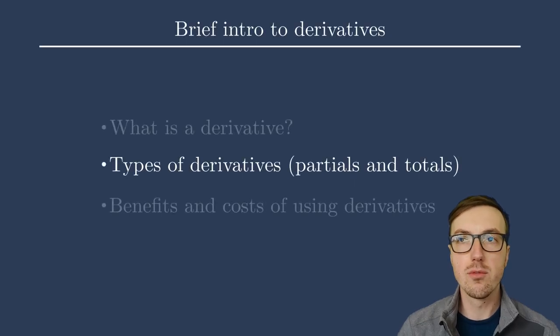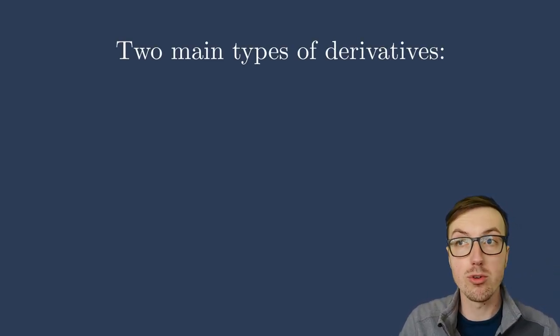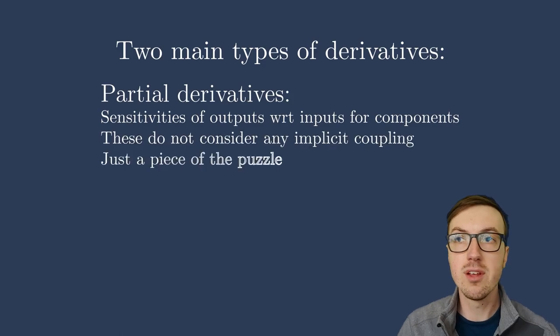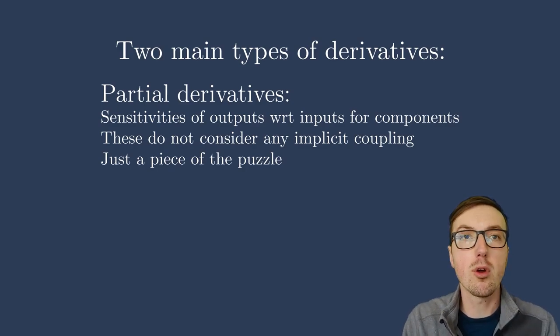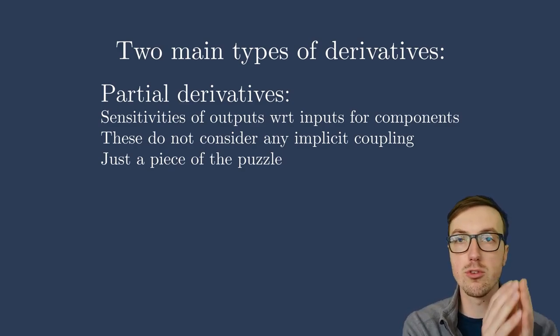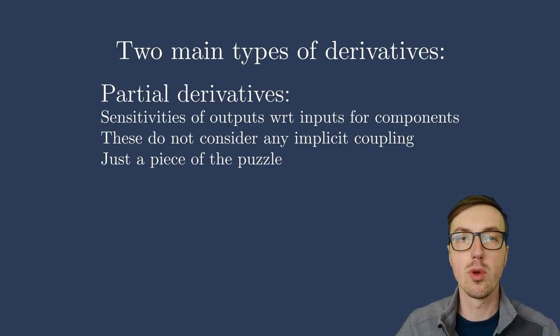Now let's talk about a few different types of derivatives. And the ones that I really want to focus on in the delineation here is between partial derivatives and total derivatives. So first I'll introduce partial derivatives. These are sensitivities of the outputs with respect to the inputs for just a little block of your model, a little block of your code. These partial derivatives don't tell the full story. They're just little bits and pieces of the puzzle that you put together to get the total derivatives.